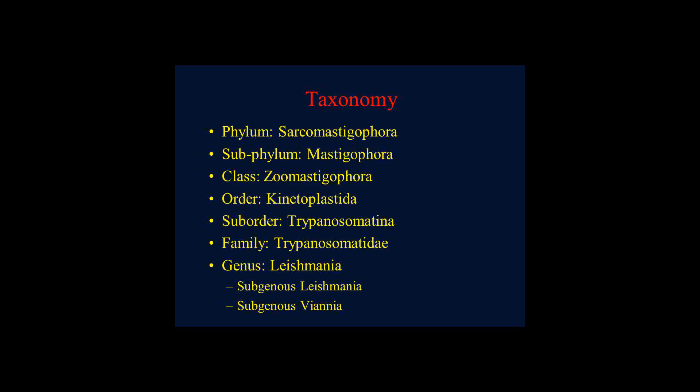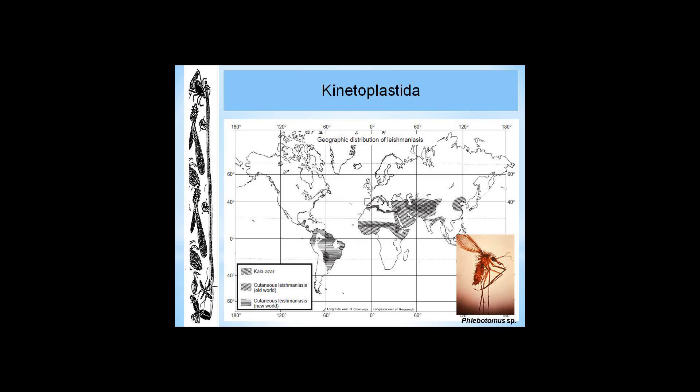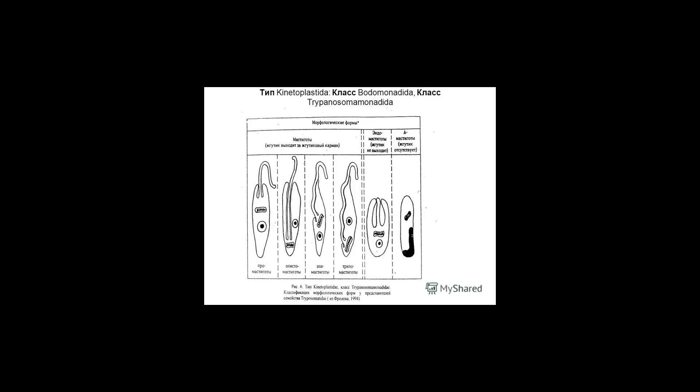Classification. Kinetoplastida is divided into two subclasses, Metakinetoplastina and Prokinetoplastina. Family Bodonidae Cavalier-Smith 2013. Family Trypanosomatidae Doflein 1901. Subclass Prokinetoplastina Vickerman 2004.